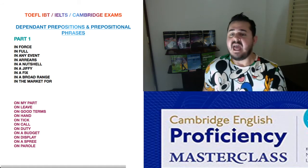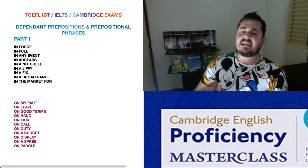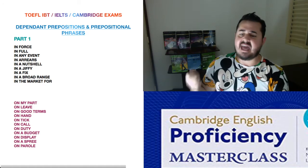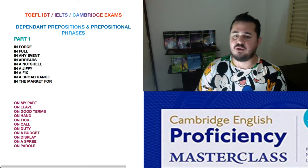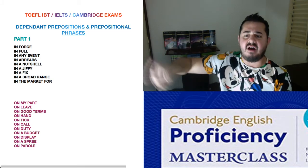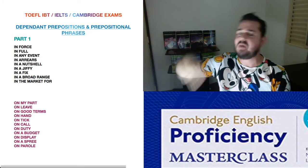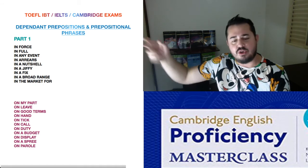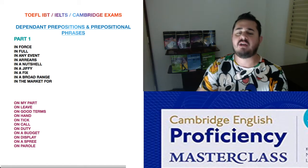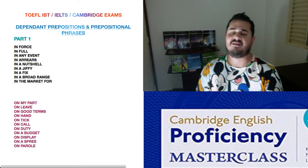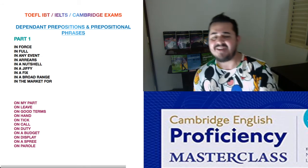Next: 'on tick.' If you pay something on tick, it means you don't have cash — you use credit. Probably you're going to pay after 30 days or 2 weeks. You don't pay upfront because you haven't got cash for that. So you're paying on tick.